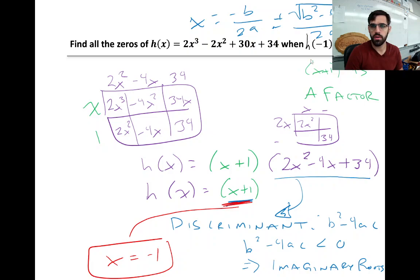So, let's see here. If h of negative 1 is 0, that means x plus 1 is a factor. So I'm going to take our polynomial function and divide it by x plus 1. The remaining piece is 2x squared minus 4x plus 34.